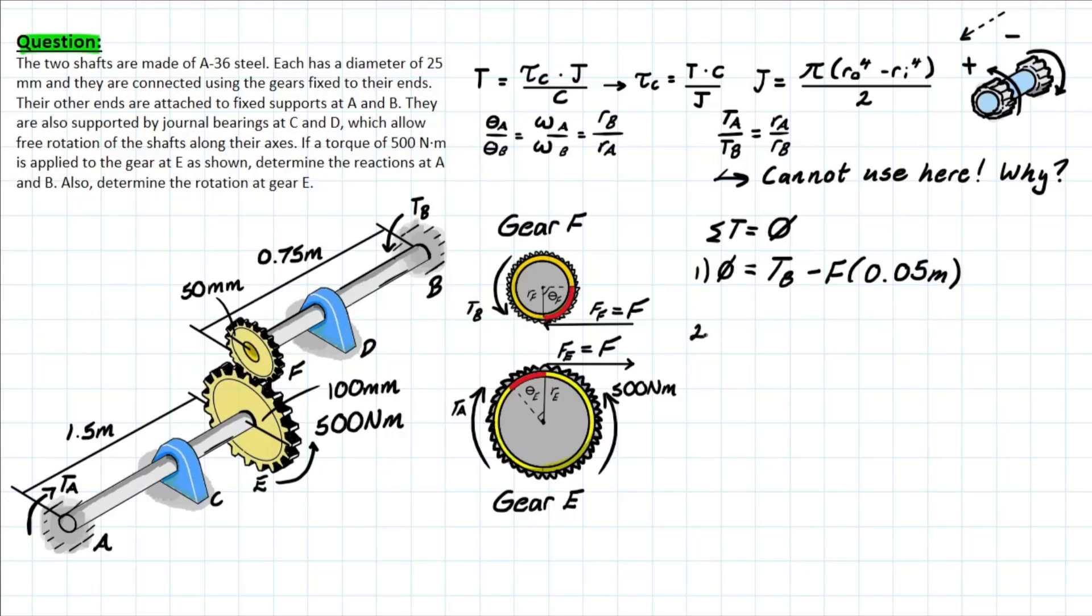Now the second assembly, which is right here for gear E, is going to be something very similar. Where based on our sign conventions, we're going to have TA, which is negative because it is going clockwise about this axis here based on that convention.